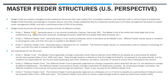Hedge fund structures typically have three entities: a master fund, an offshore feeder fund, and an onshore feeder fund. The master fund is normally set up in a tax-neutral jurisdiction — essentially tax-free — such as the Cayman Islands or Bermuda. The master fund is the entity that actually holds title to the assets, opens brokerage accounts with custodians like Goldman Sachs or JP Morgan, and also invests in privately held companies.